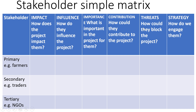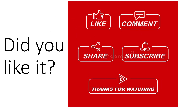Then contribution — how could stakeholders contribute to the project? Then threats — how could they block the project? Having done all this analysis, we can now come out with a strategy: how do we engage them? With this simple analysis, the stakeholders we saw destroying a project would have been involved, and probably that destruction would not have occurred.